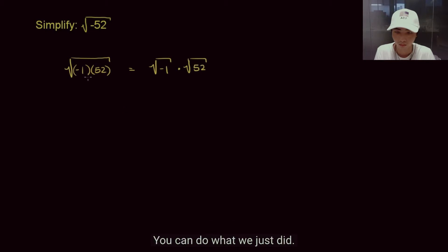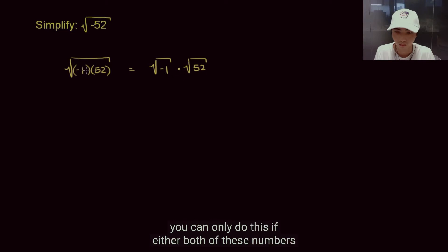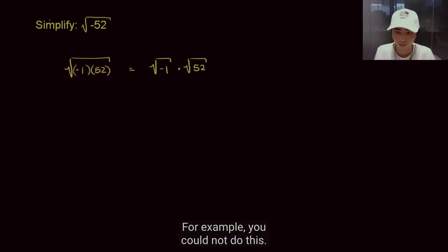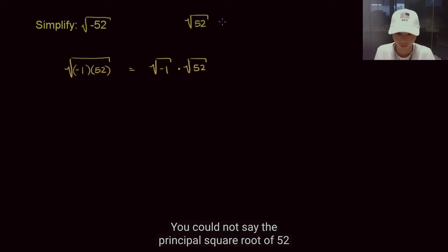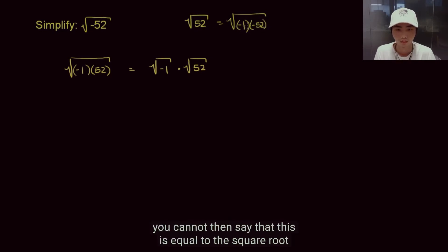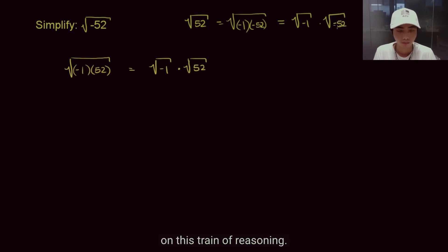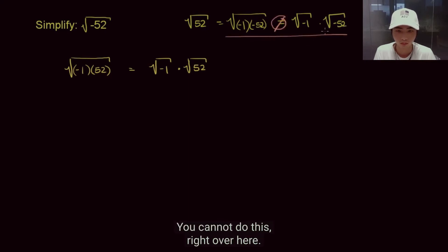I want to be very clear: if we have the principal square root of the product of two things, we can rewrite that as the principal square root of each and then take the product — but only if both numbers are positive, or only one of them is negative. You cannot do this if both are negative. For example, you cannot say the square root of 52 equals the square root of negative 1 times the square root of negative 52. The property does not work when both numbers are negative.